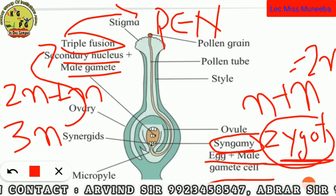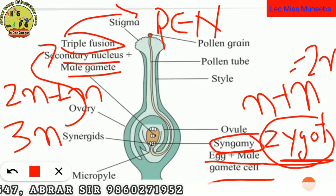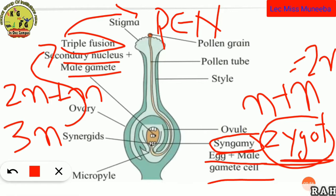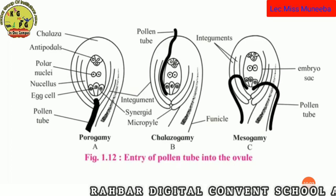So, the product of Triple Fusion is the Primary Endosperm Nucleus — PEN. Now let us understand the types of entry of pollen tube into the ovule.